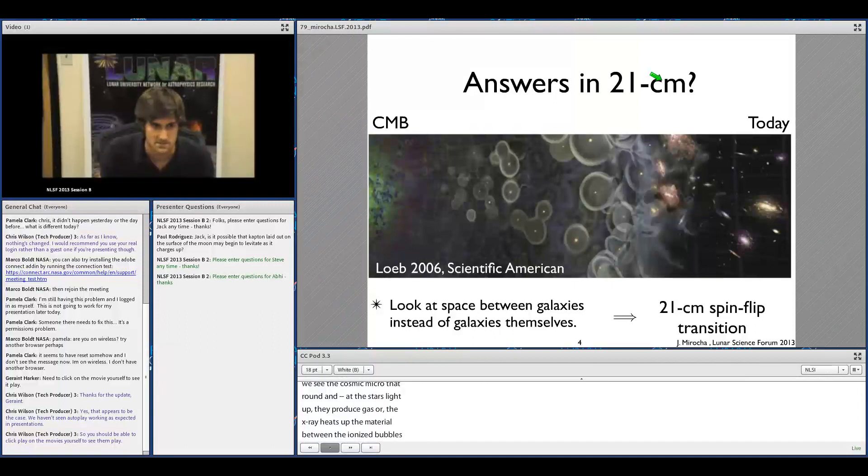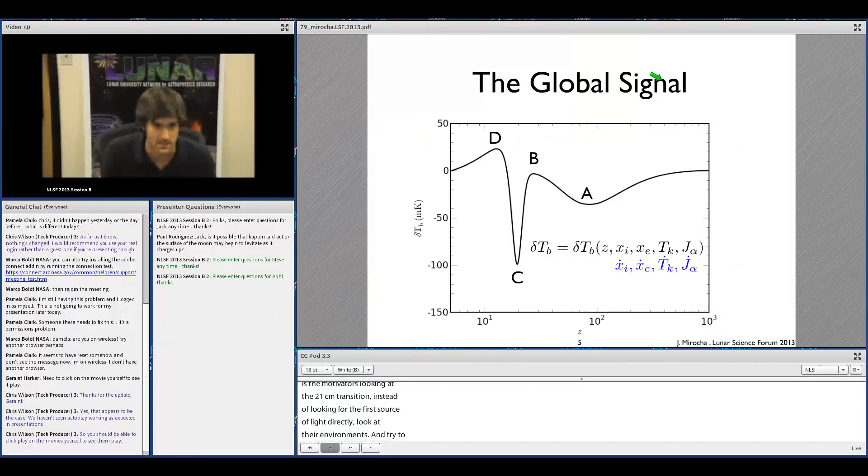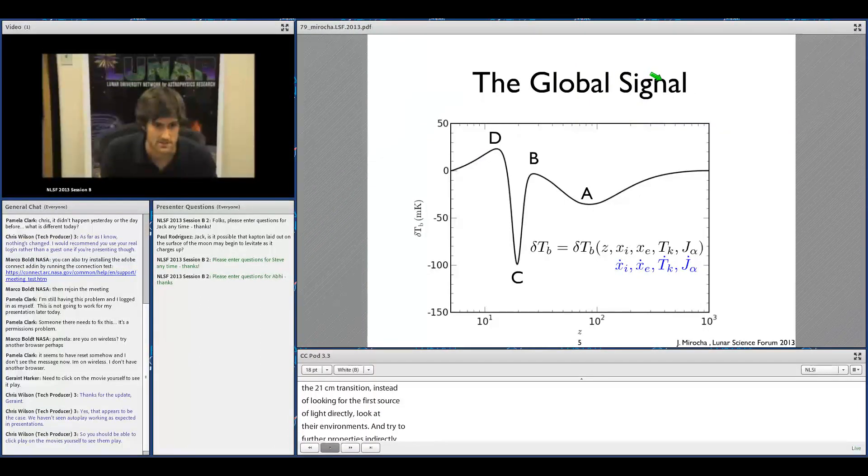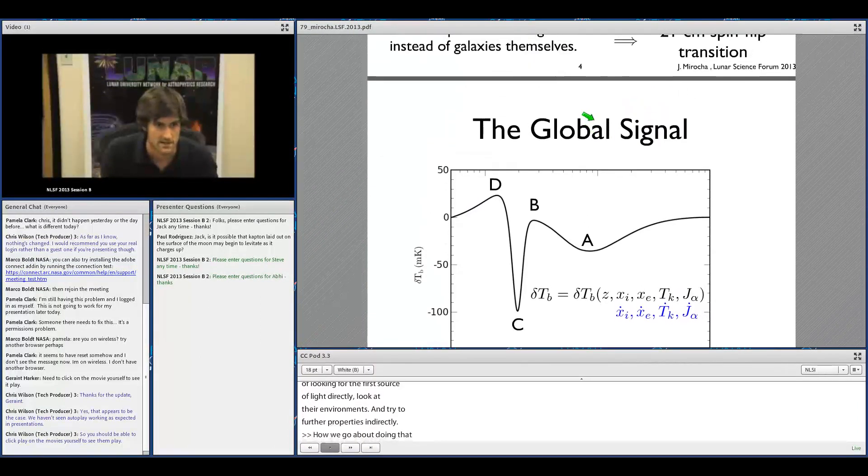So that's really one of the motivations of looking at the 21-centimeter transition - instead of looking for the first sources of light directly, look at their environment and try to infer their properties indirectly.